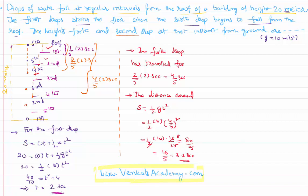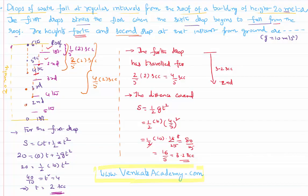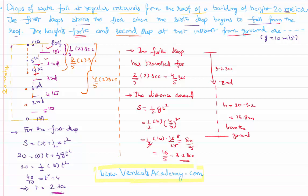Now, the distance covered by the fourth drop is 3.2 meters from the roof. Since the total height is 20 meters, the height of the fourth drop from the ground is 20 − 3.2 = 16.8 meters from the ground.